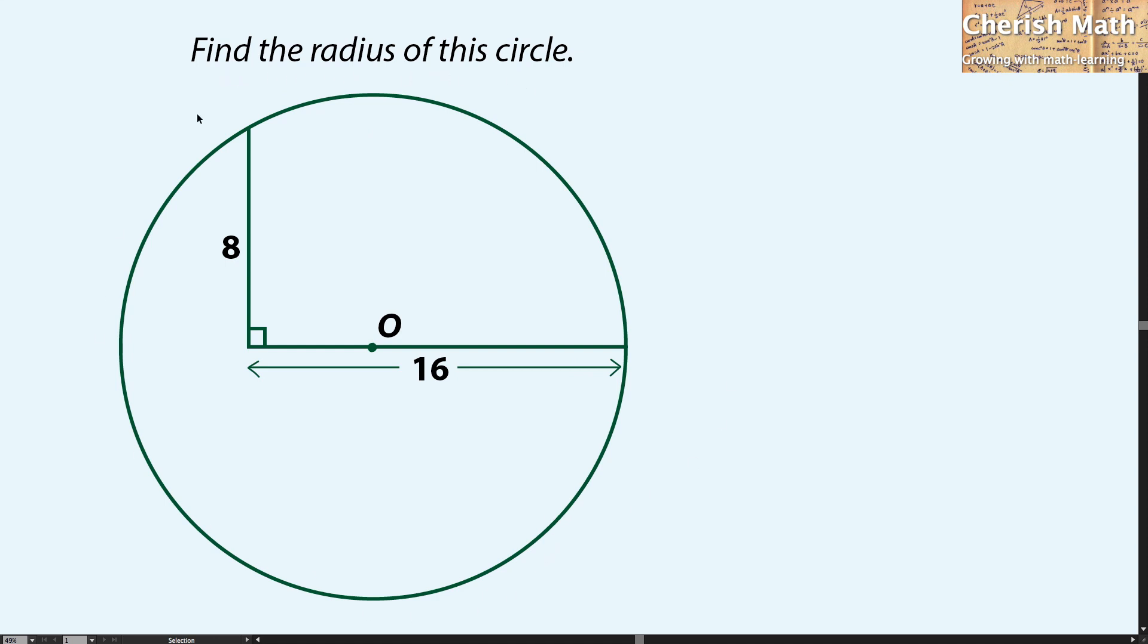Here is the circle that is given with the measurement of 16 units horizontally and 8 units vertically. O stands for the center of the circle.